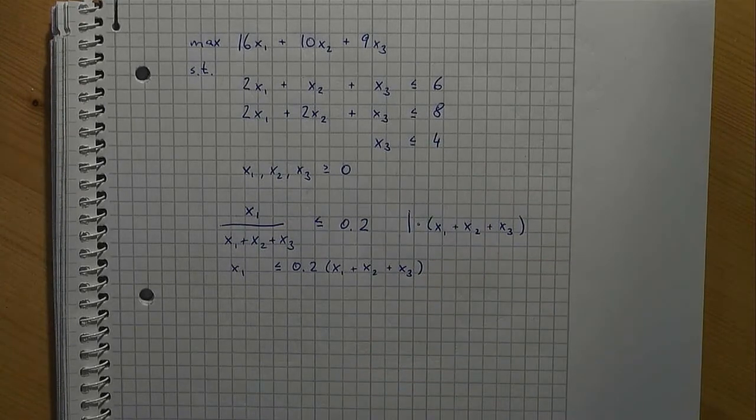Watch out, we have here an inequality and, as we know from a previous video, multiplying inequalities with negative numbers would change the direction of the inequality. Therefore, it is important to check at this point whether or not the denominator we have just multiplied with can be negative. Since all axes have a non-negative domain, the sum of the axes is non-negative and we don't need to worry here.